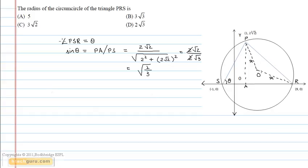Now PR is equal to the distance between the points P and R, i.e. root of 1 minus 9 whole square plus 2 root 2 whole square which is equal to 6 root 2.